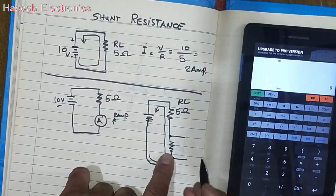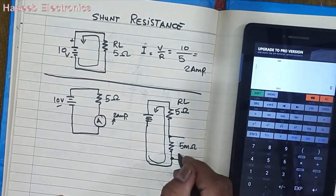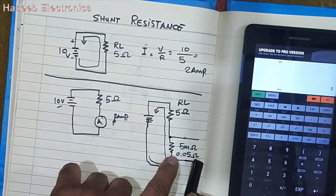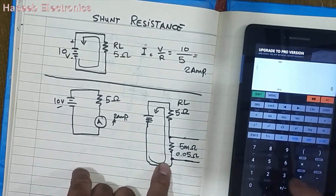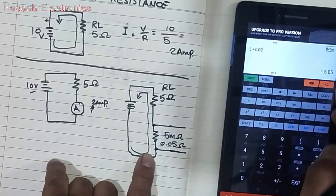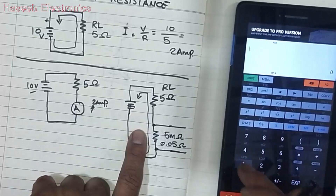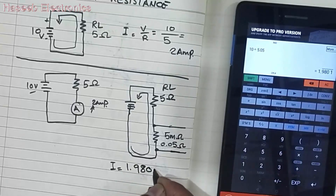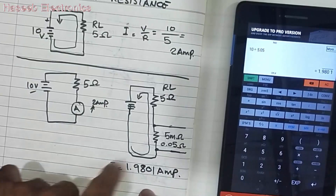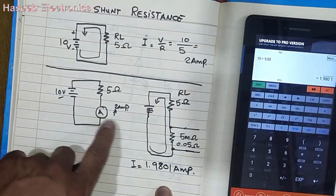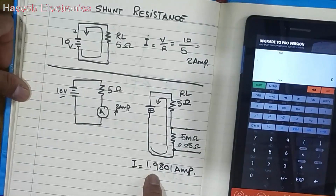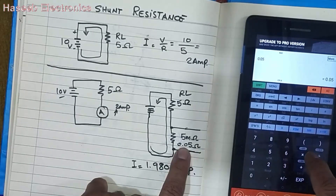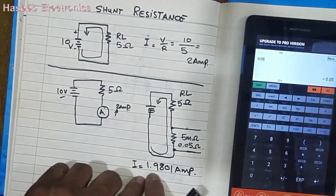The shunt resistance is in milliohms — for example, 5 milliohms, which we can say is 0.05 ohms. We add this very small resistance in series with the load. So the total is 5 plus 0.05 ohms, which is 5.05 ohms. The total load current becomes 10 volts divided by 5.05 ohms, which is approximately 1.9801 amperes — very close to the original 2 amperes. When this current flows, it causes a voltage drop across this shunt resistance.